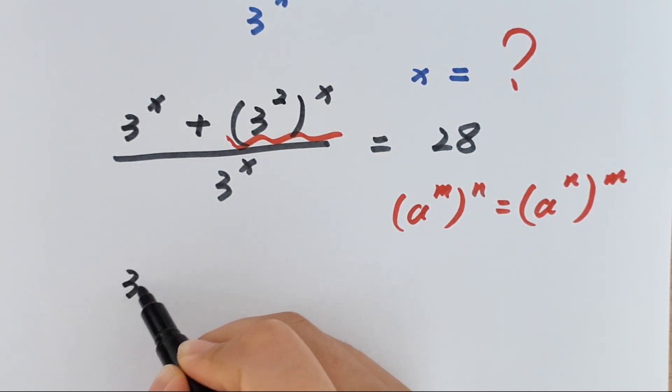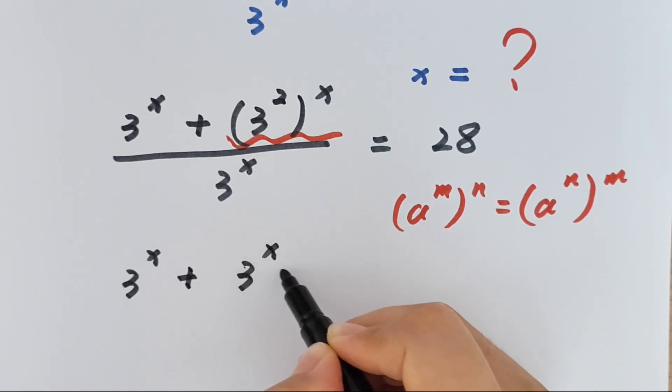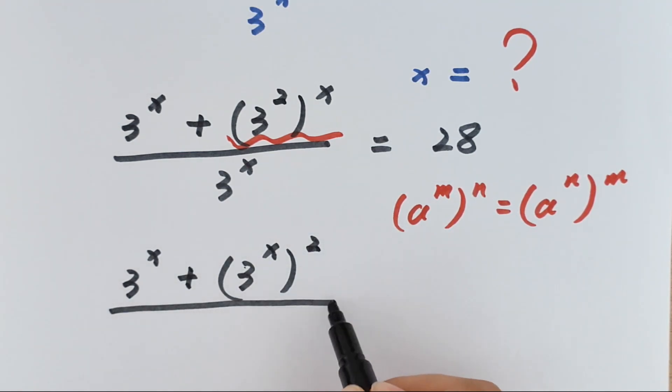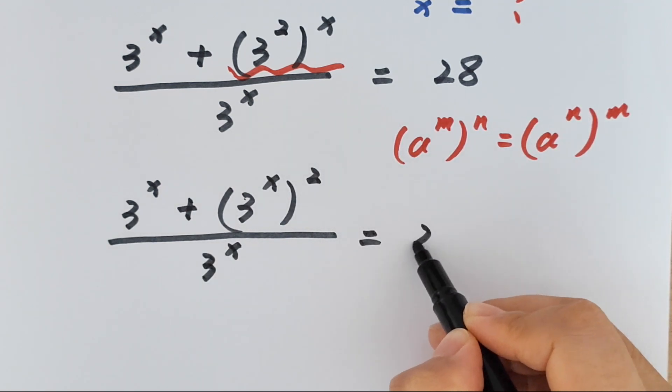So 3 to the power of x plus 3 to the power of x bracket to the power of 2 divided by 3 to the power of x equals 28.